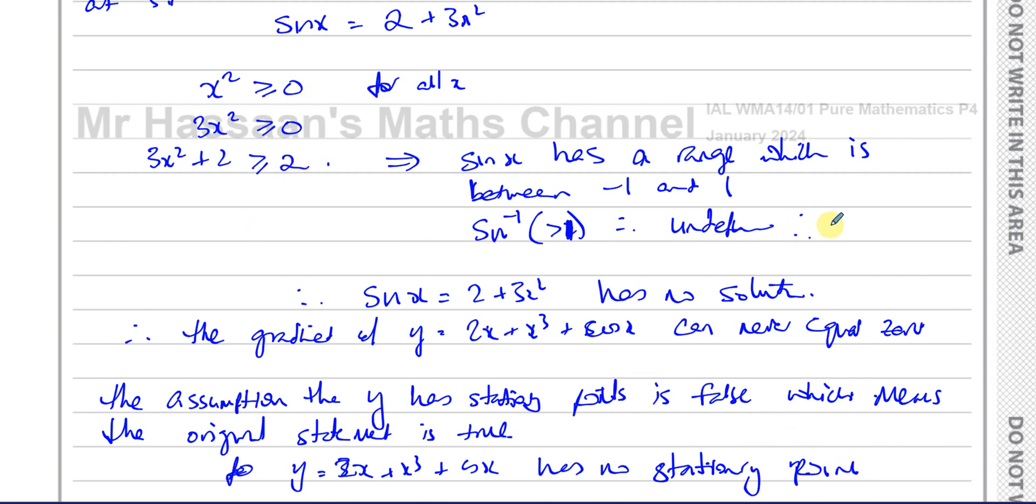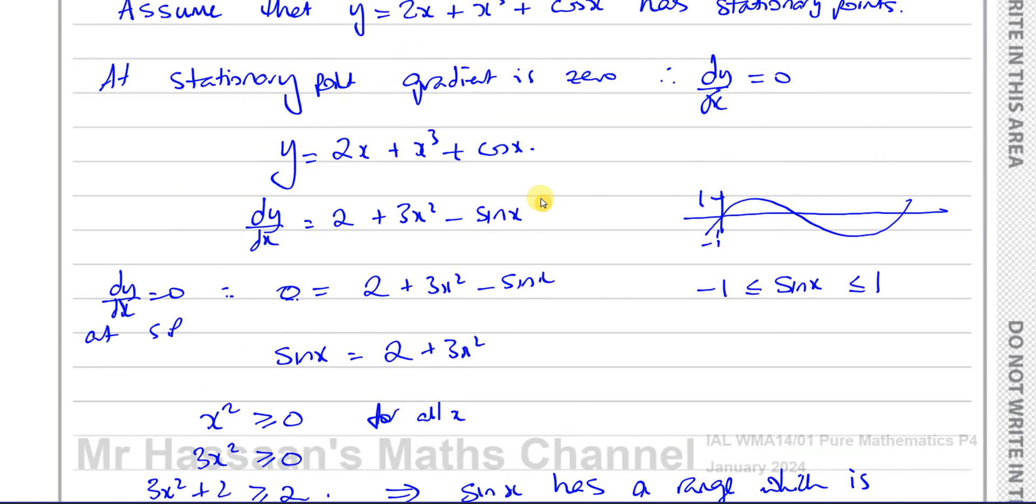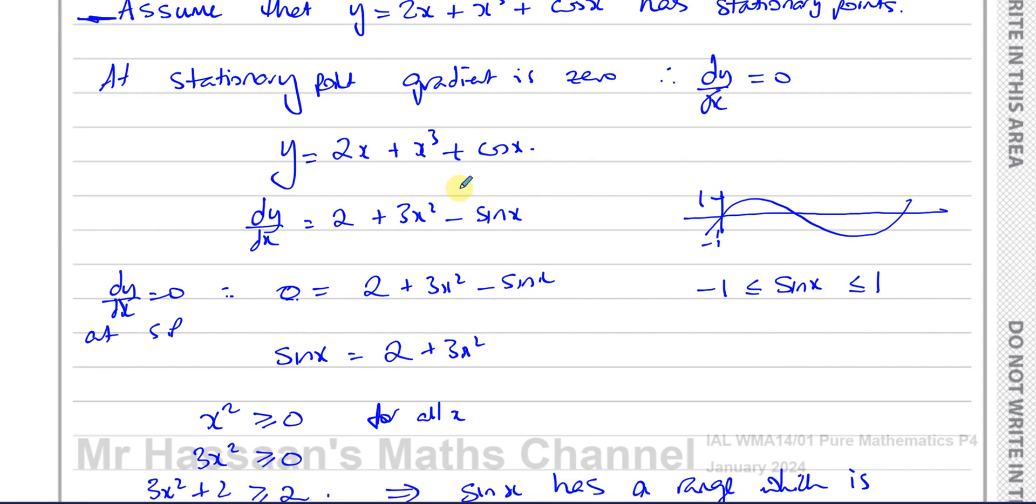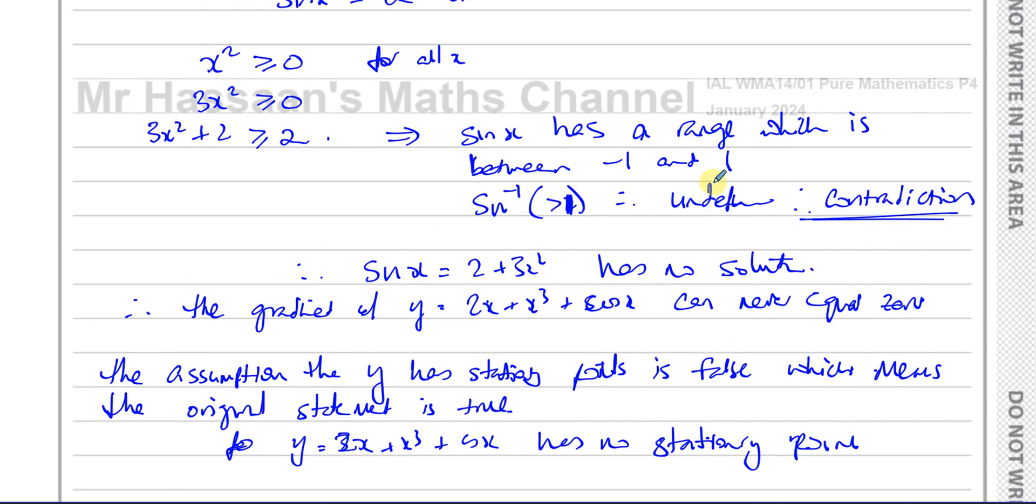So we can say that, but it's good to say therefore a contradiction. It's best to write contradiction, so it's contradicted our statement. It contradicts that statement, this assumption. This assumption is contradicted by the fact that this is undefined.